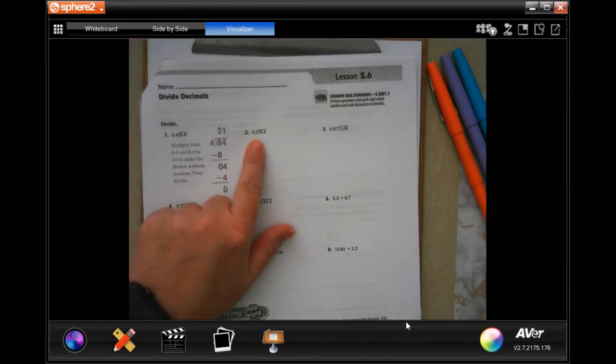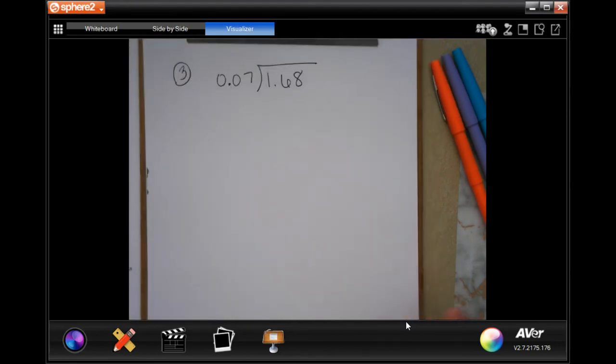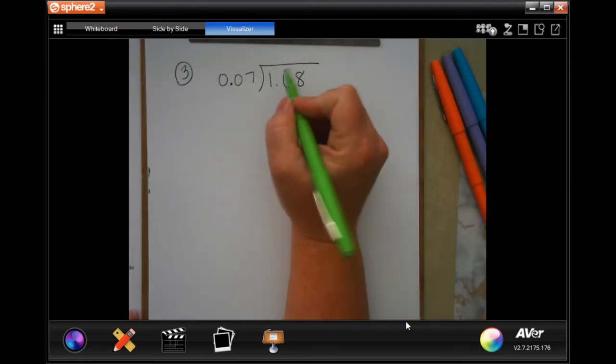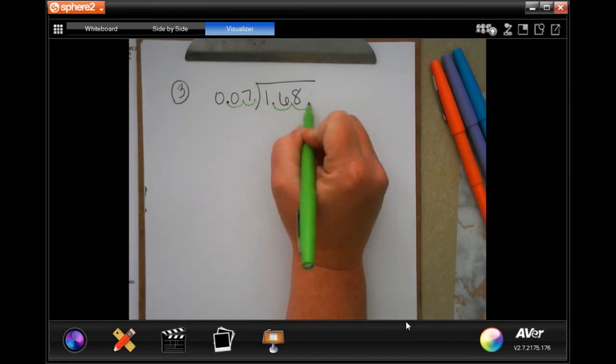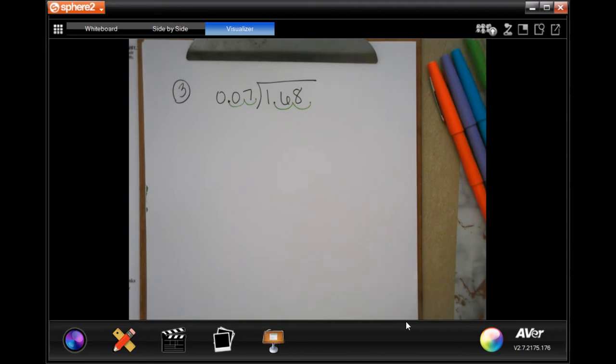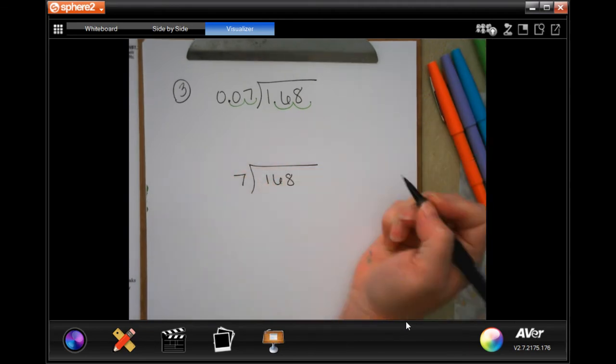So I'm not going to do number two because it's going to be super easy for you. Once you figure out how to do it, you can go back and do that one in about two seconds. We're going to start at number three. Because if you'll remember from the last lesson, we cannot have a decimal outside of the box. So I have to move it one, two times, which means I need to move this one, two times. So now I'm going to have seven into 168.